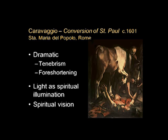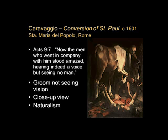The tenebrism is this darkness that is penetrated by the light. Now, the other people didn't see the vision. Acts 9:7 says, 'Now the men who went in company with him stood amazed, hearing indeed a voice, but seeing no man.' And as you can see, the groom isn't looking up to the vision — he's not seeing it. He's sort of looking down and saying, 'What's going on, Master?'